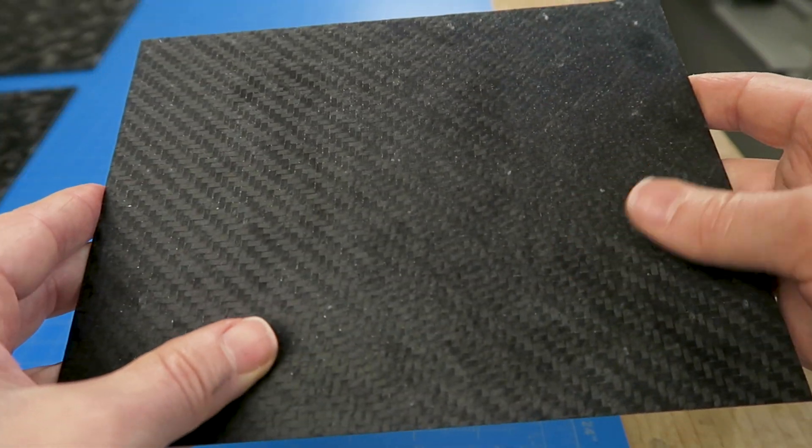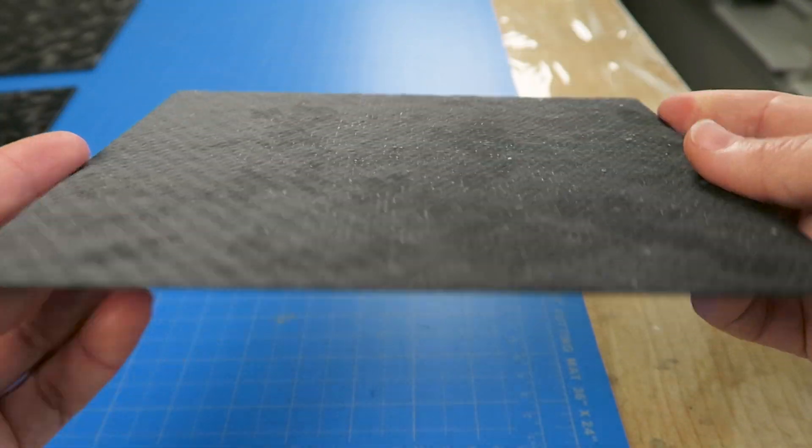The pattern comes out quite defined using the vacuum infusion process because the fibers don't really shift around.